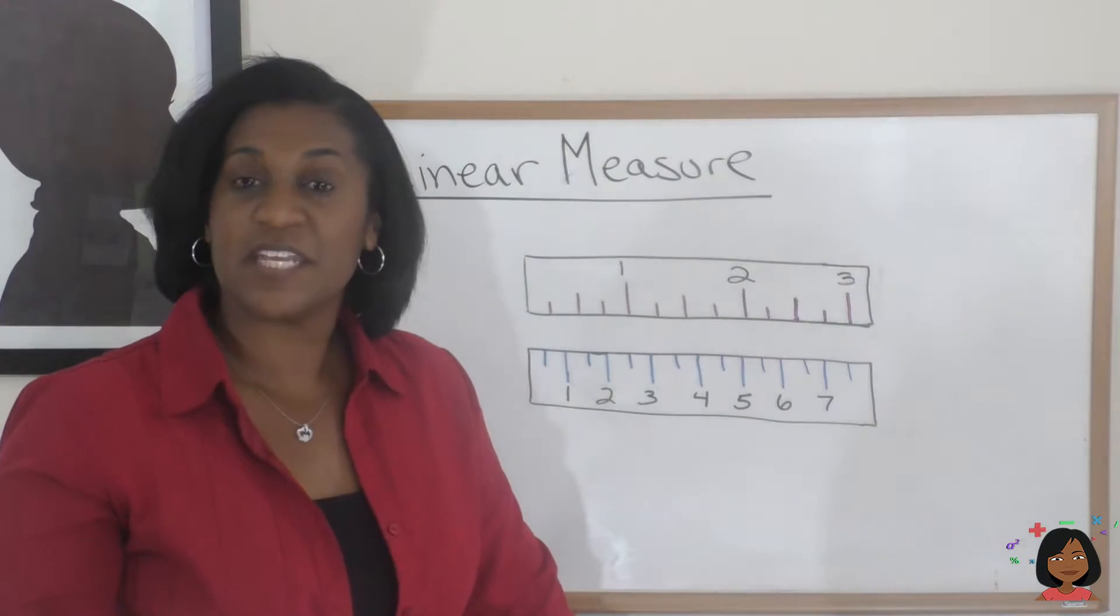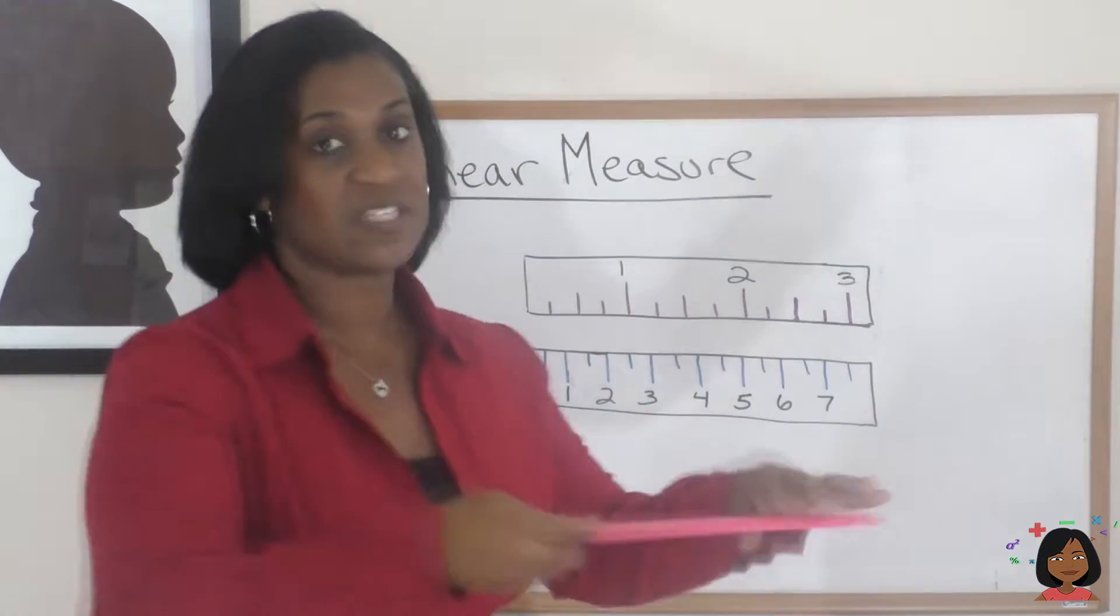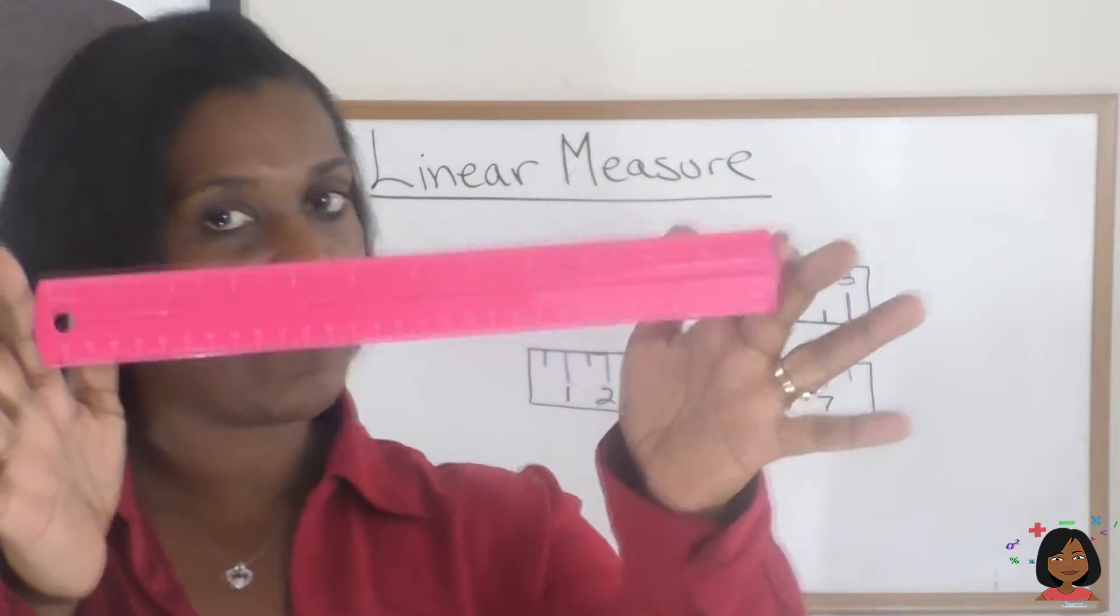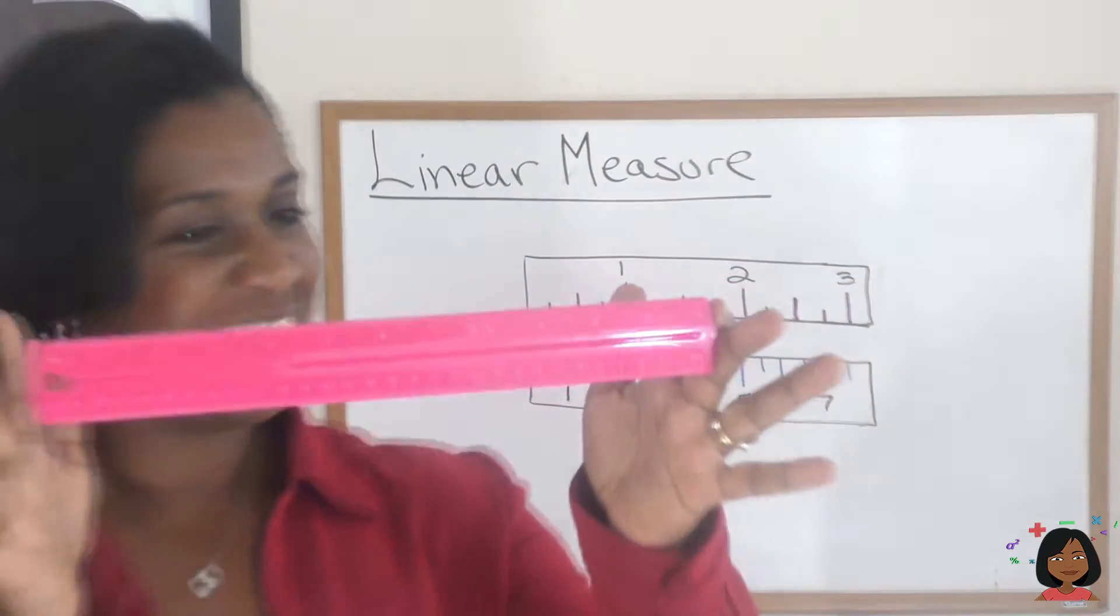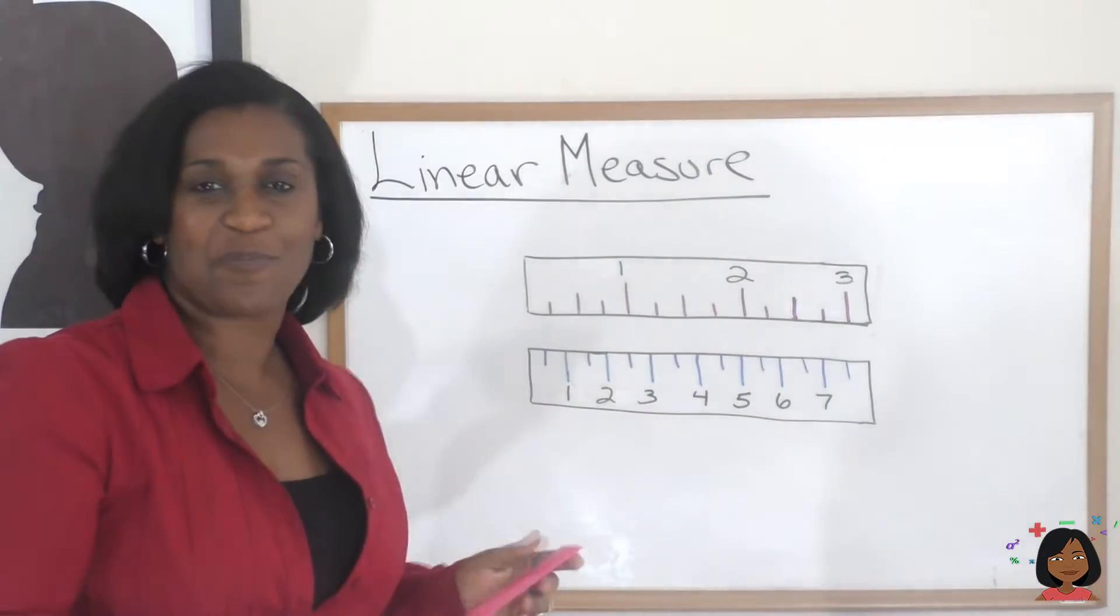So when it comes to linear measure, there are a few things that we use. You probably have seen one of these before. It's a ruler. I'll give you a close zoom up of my ruler. And I've drawn a pseudo ruler on the board for you.